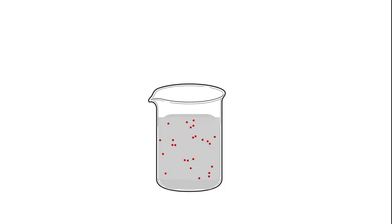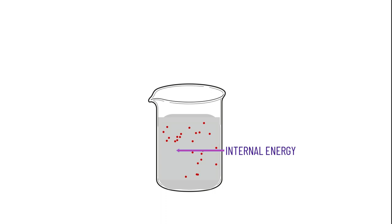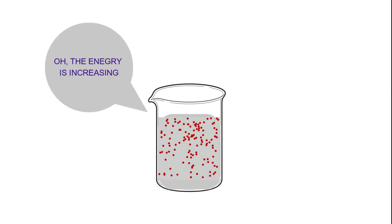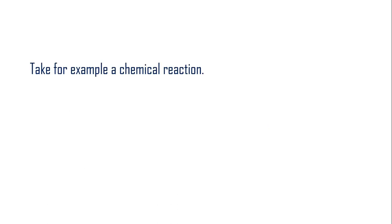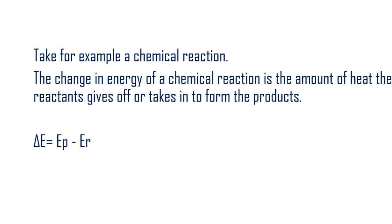It is believed that every substance has a definite amount of energy called the internal energy, except that it cannot be accurately calculated. But the change in this energy can be measured, which we know as delta E. A very good example is a chemical reaction — the change in energy of a chemical reaction is the amount of heat the reaction gives off or takes in to form its products, and is represented as delta E.